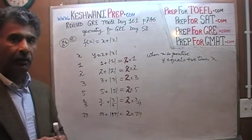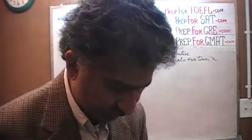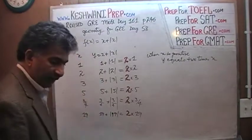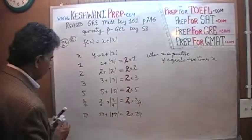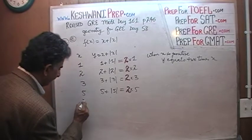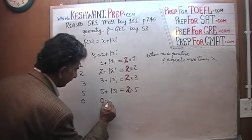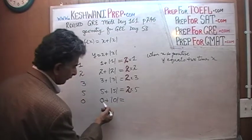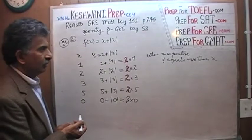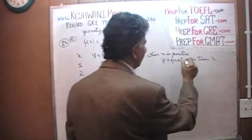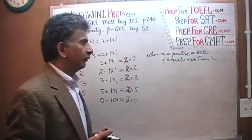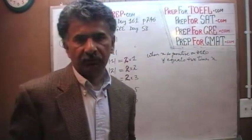Now let's see what happens when x is not positive. But before we do that, let's do one last example. What happens if x is 0? If x is 0, we get 0 plus the absolute value of 0, which of course is 0 — 0 plus 0 equals 0, which is the same as 2 times 0. So we should actually say: when x is positive or 0, y equals 2 times x, because 2 times 0 is 0. So 0 also qualifies.